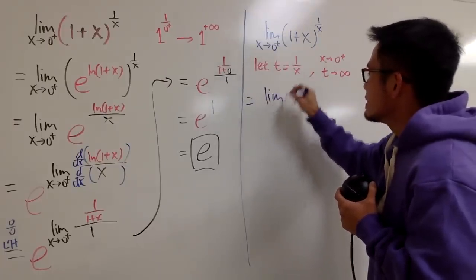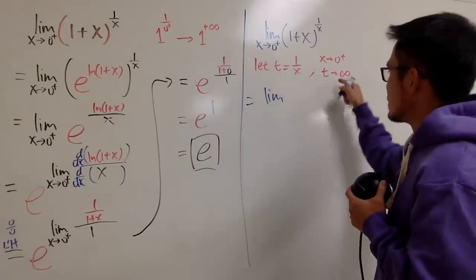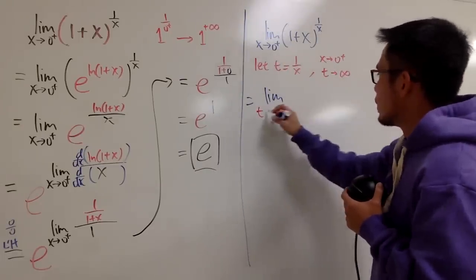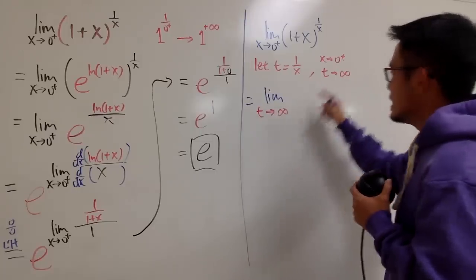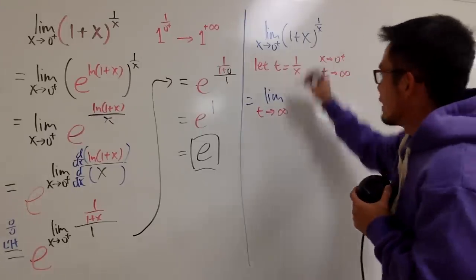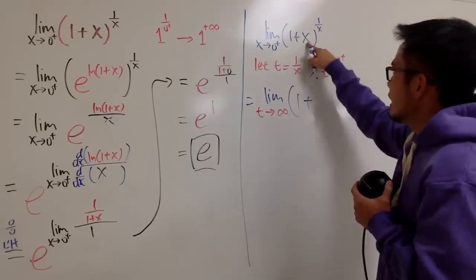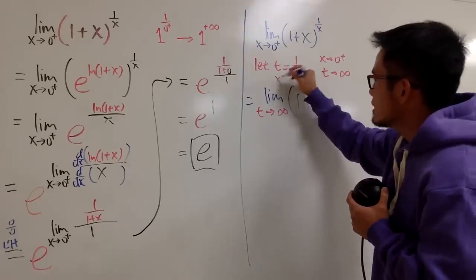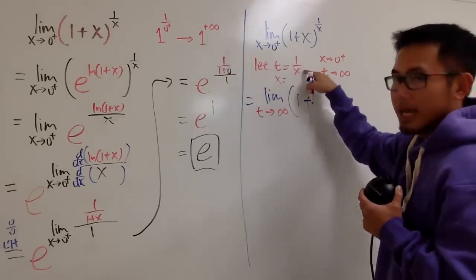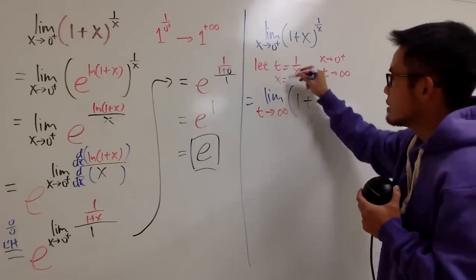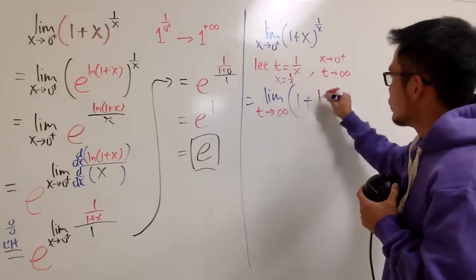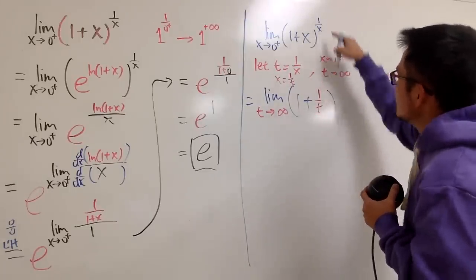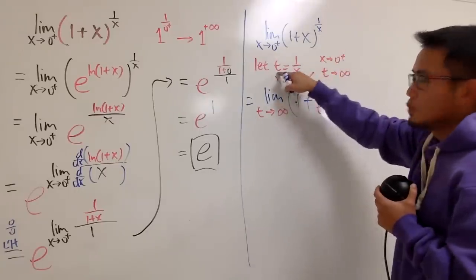This is equal to the limit - I will change that to t. I will write everything into the t world. We will have t going toward positive infinity. And then I have the parentheses. I have the 1. I have the plus. The x is what? Well, t is equal to 1 over x. That means x is equal to - I multiply both sides by x. Divide both sides by t. So x is equal to 1 over t. So x is equal to 1 over t like this. And then, raise this right here to the 1 over x power, and that's equal to t now.